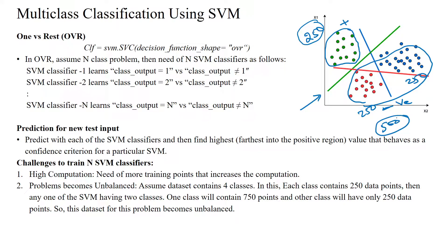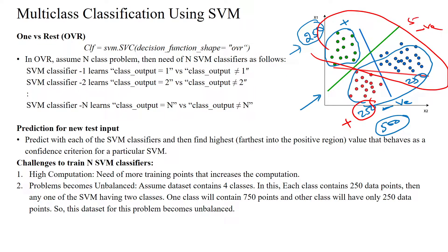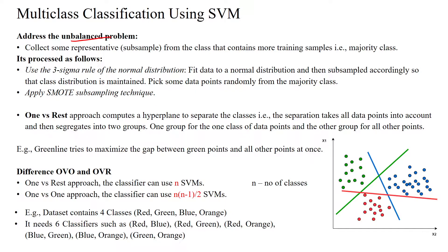Here, 500 data points are available in the negative class and only 250 in the positive. So it is unbalanced. Likewise, when considering another class — 250 in the red color — all remaining 250 plus 250 will become negative, making 500 negative versus 250 positive. This unbalanced dataset becomes a headache in the one versus rest classifier. To address the unbalanced problem, we can collect some representatives — that is, subsamples from the class that contains more training samples. We can collect only a smaller number of samples belonging to the majority class.